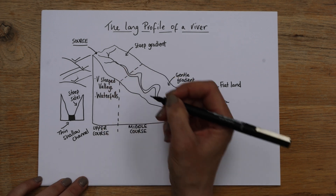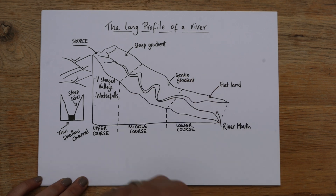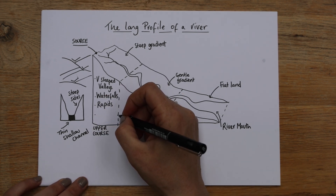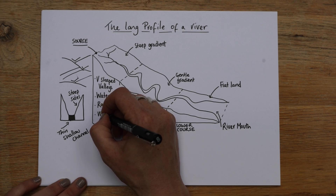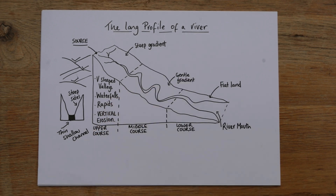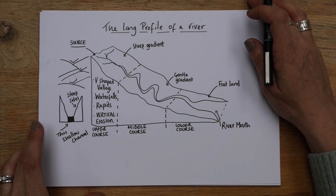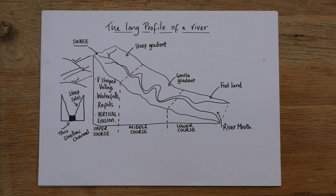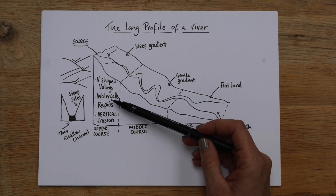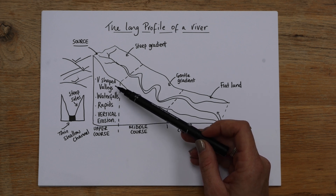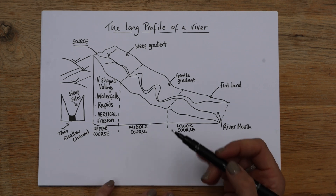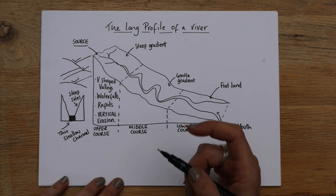This is also the place where we find waterfalls, with those steep sides, and gorges left behind by the waterfall. We also might find rapids where the water is moving quite quickly over the river load. This is all happening because of vertical erosion — a lot of the erosion is happening vertically due to gravity because of that steep gradient. In an exam you'd be expected to know how those things form — I've got other videos on waterfalls, so do have a look at those to find out how they form individually.